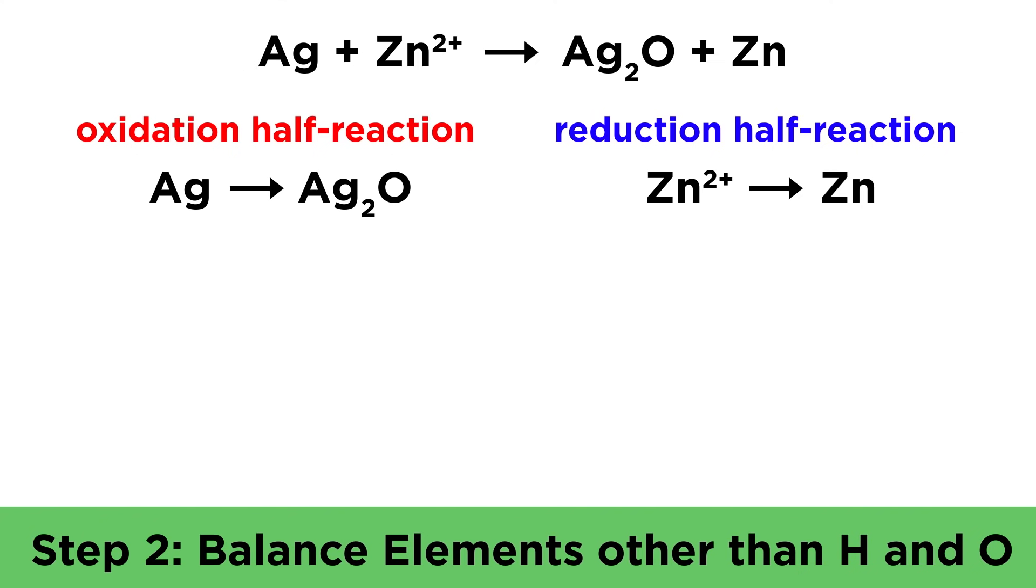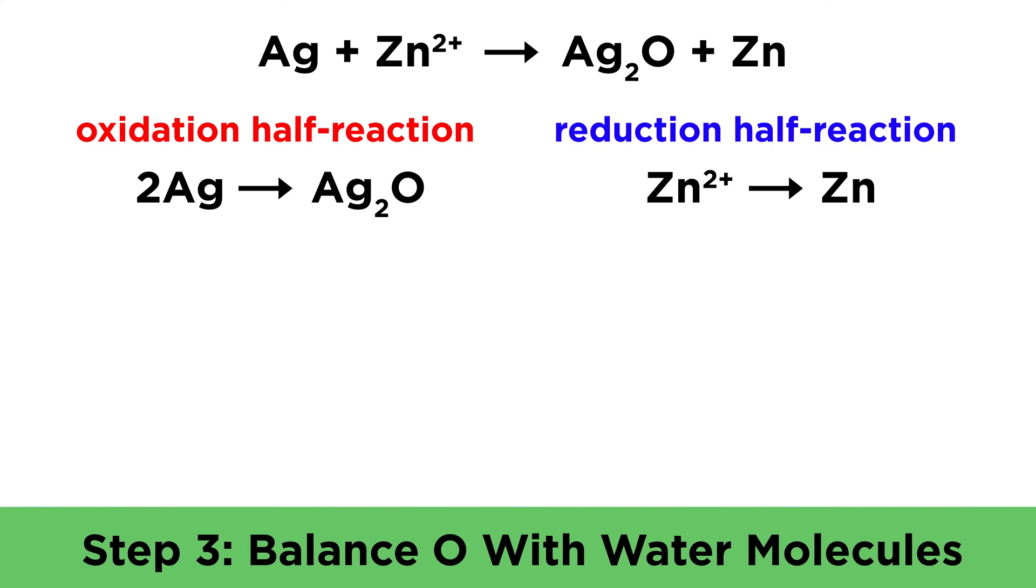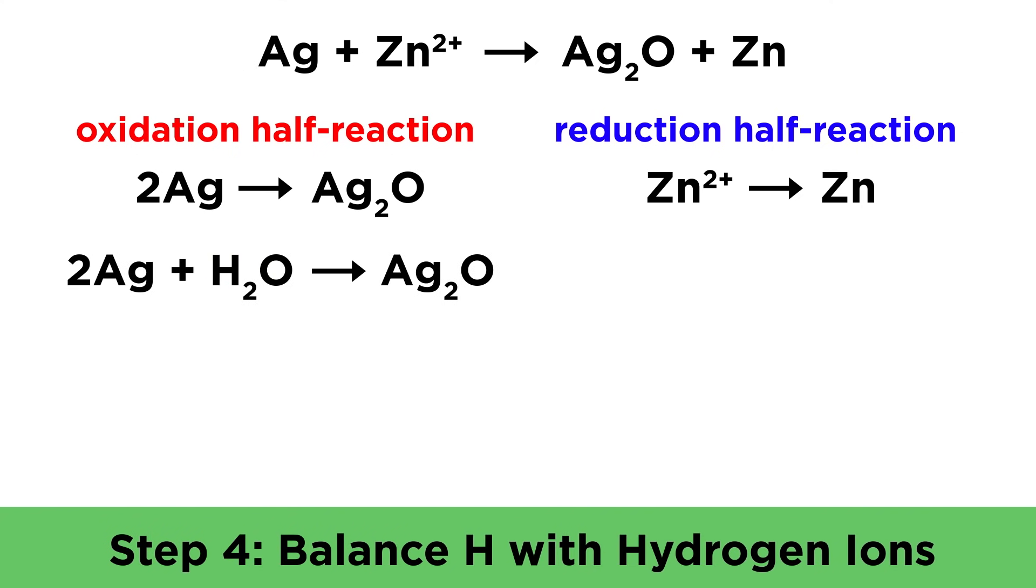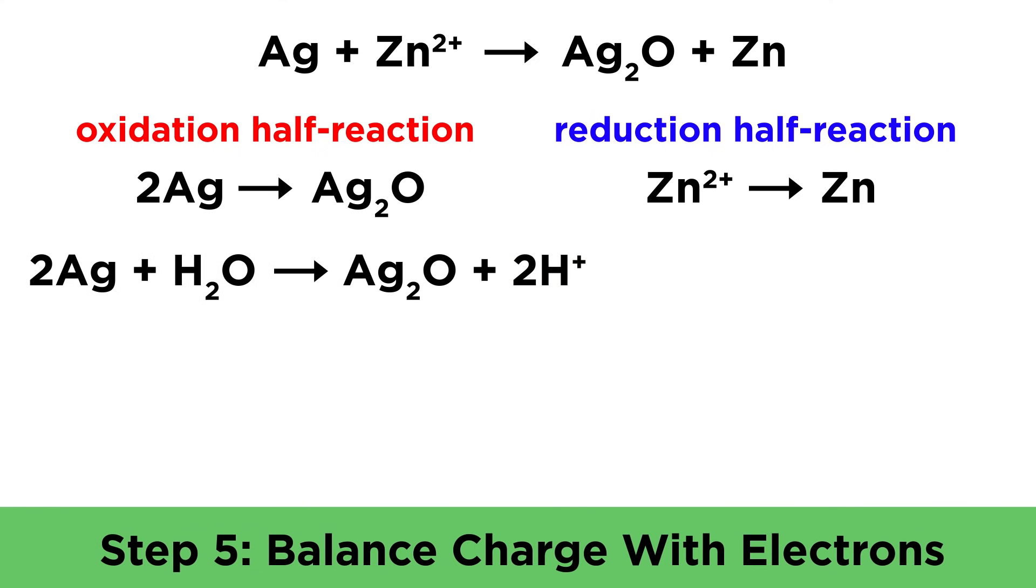Then just as before, we balance elements other than hydrogen and oxygen. That will involve placing a two here before solid silver. Next we balance oxygen with water molecules. That means one on the left here. Then we balance hydrogens with protons, which means two on the right here. Then we balance charge by including electrons. That means two on the right for this one, and two on the left for this one.